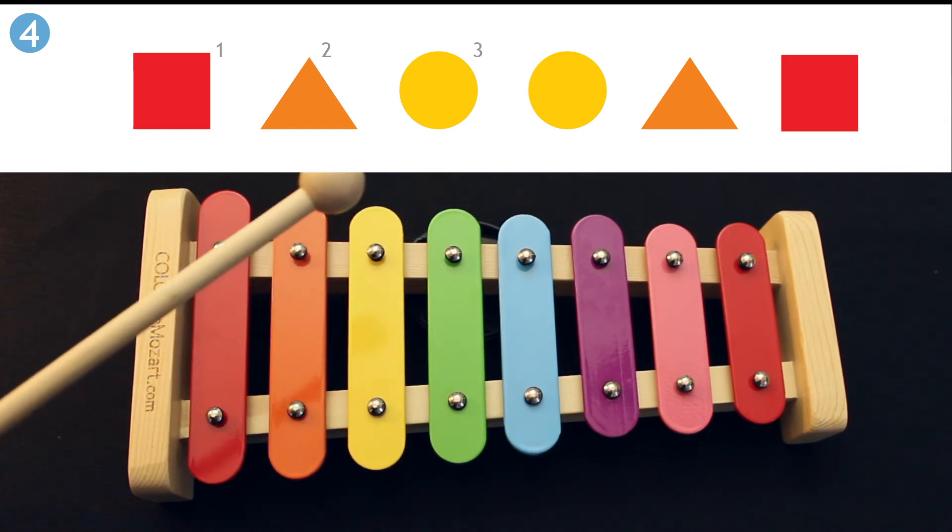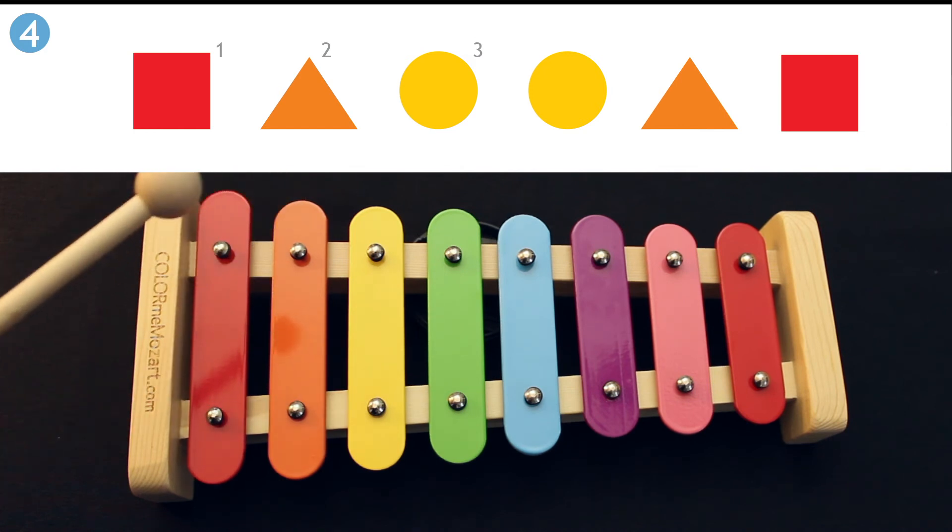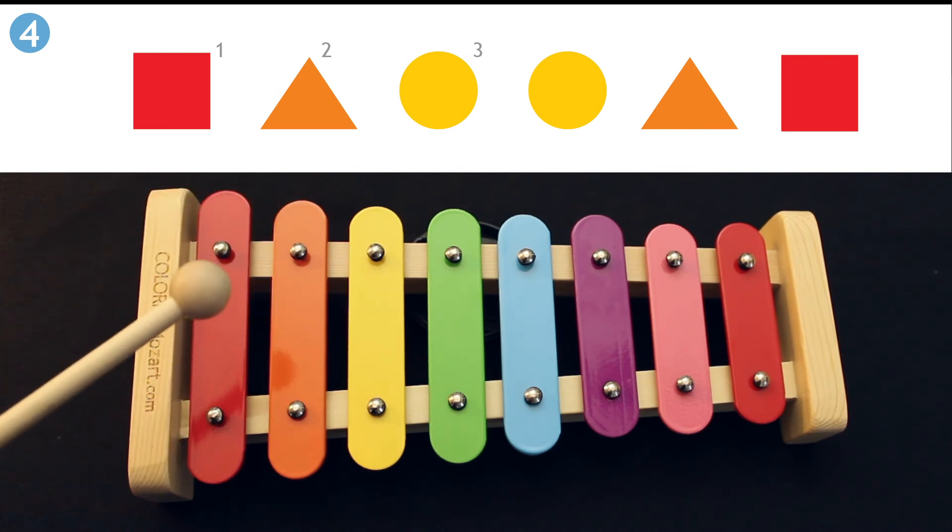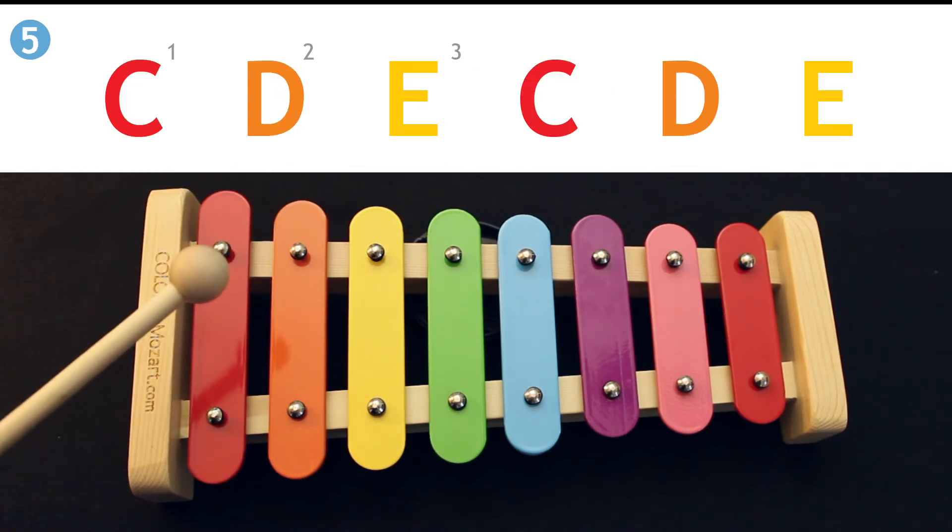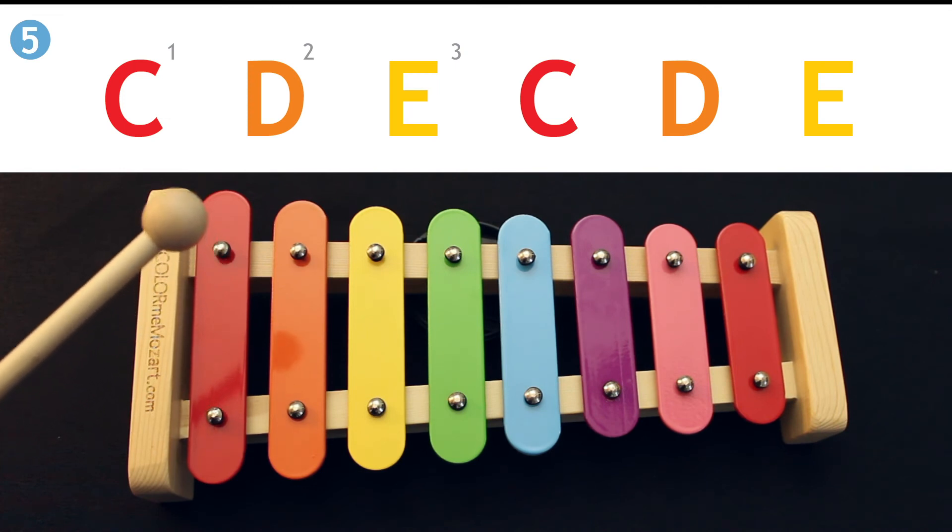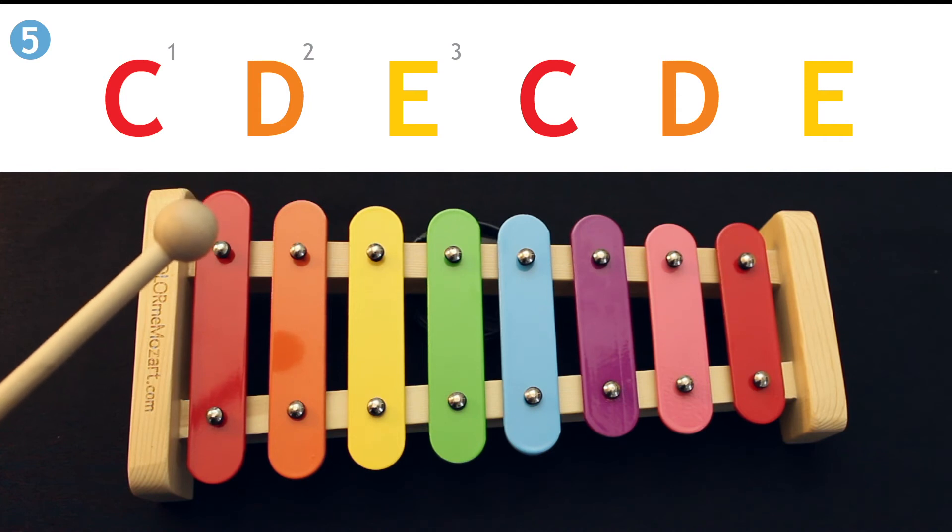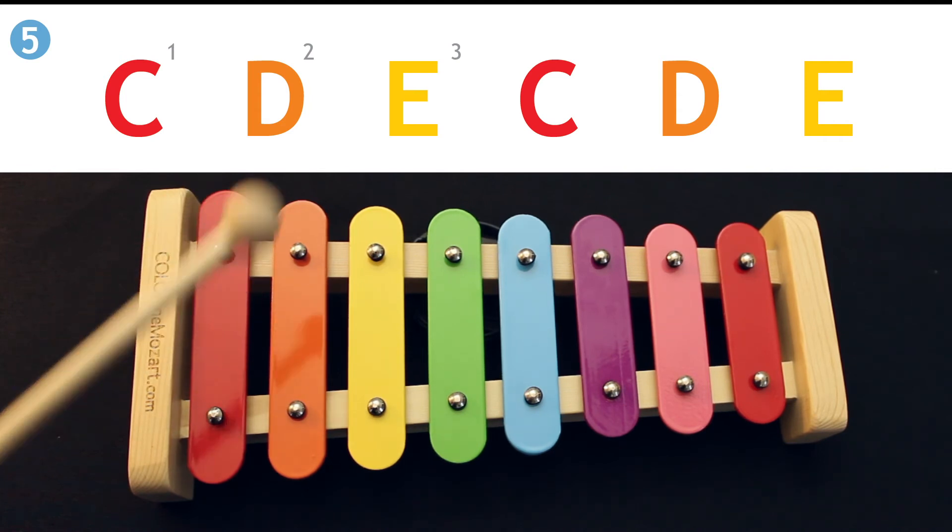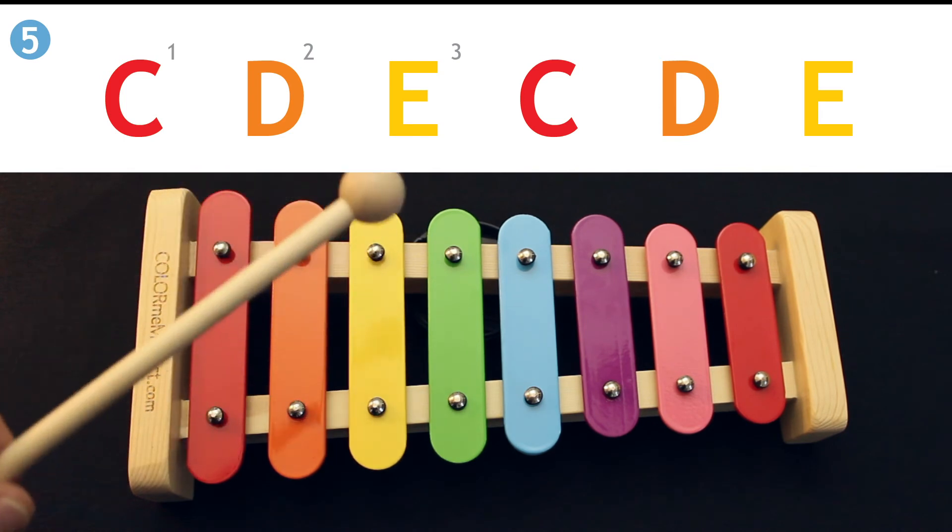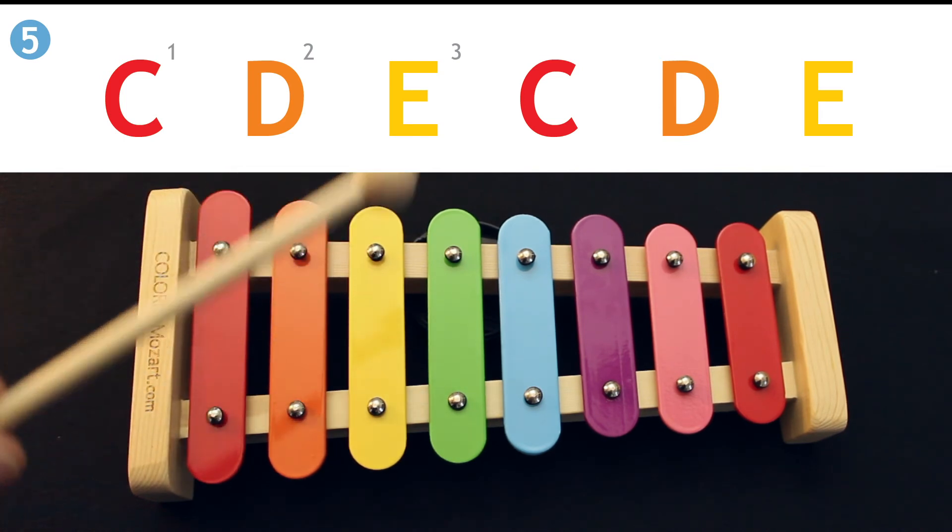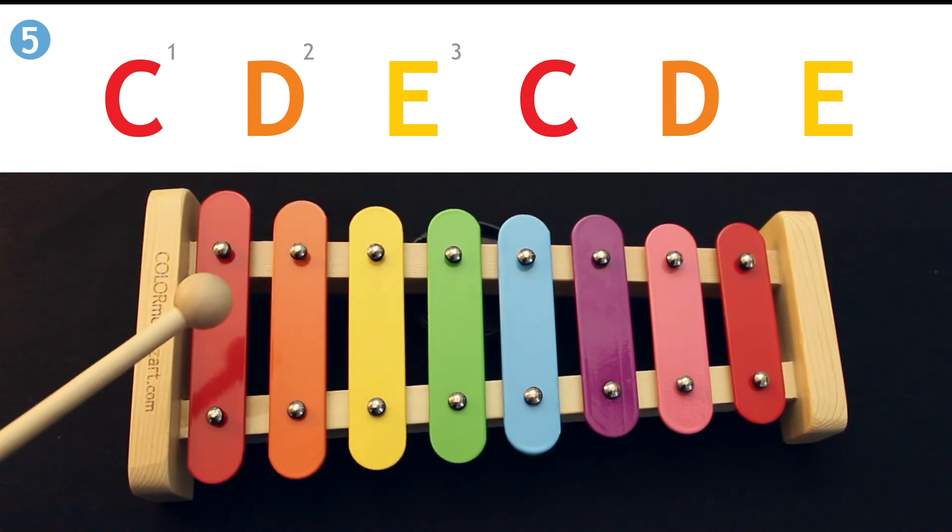Now let's try exercise number five. Here we have two repetitions of C, D, E, and then we go back to C, D, E. We'll try: one, two, three, go: C, D, E, C, D, E. One more time, one, two, three, go.